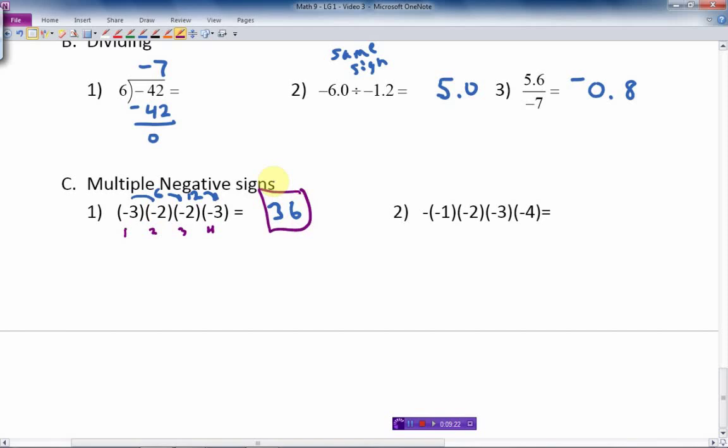If it's an odd number of negatives, then we just make it a negative answer. Okay, and you can test that out by multiplying. Negative 3 times negative 2 is positive 6. Times negative 2 gives me negative 12. And that times negative 3 gives me positive 36. So the easy way to do it is to multiply the numbers together, then put the sign on at the end, just count the number of negatives up, see if it's an even number or an odd number.